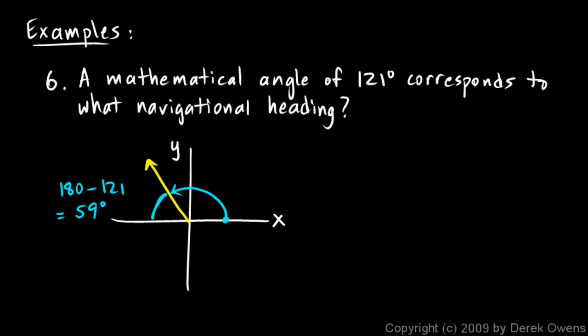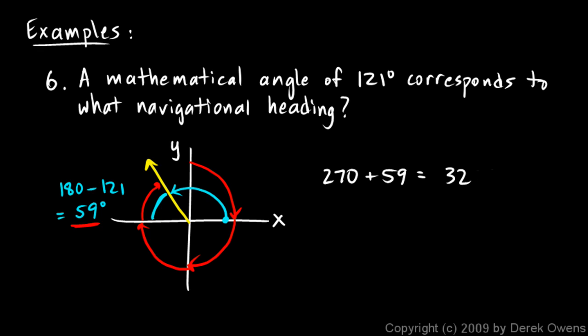So what's the navigational heading? The navigational heading starts at north. That's 90, 180, 270, and then I need this much more — and that we know is 59. So this is just going to be 270 plus 59, which comes out to 329 degrees. A diagram makes that a lot easier to see. Even if you're not given a diagram, it's worth taking two seconds to draw the little xy axes or the north-south-east-west compass rose. A good visual picture can really help you think through these things more clearly.